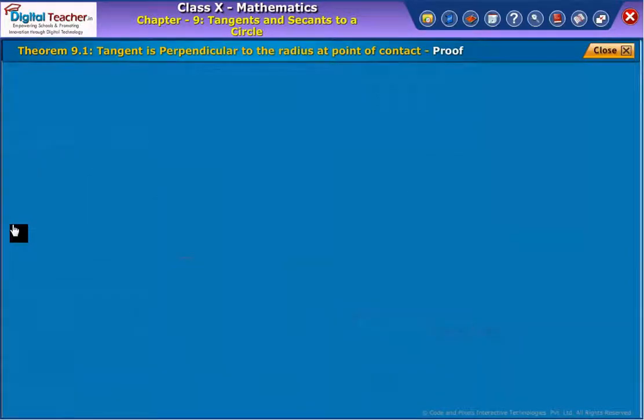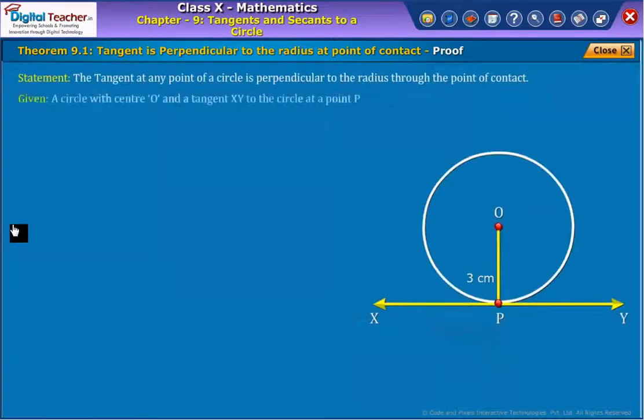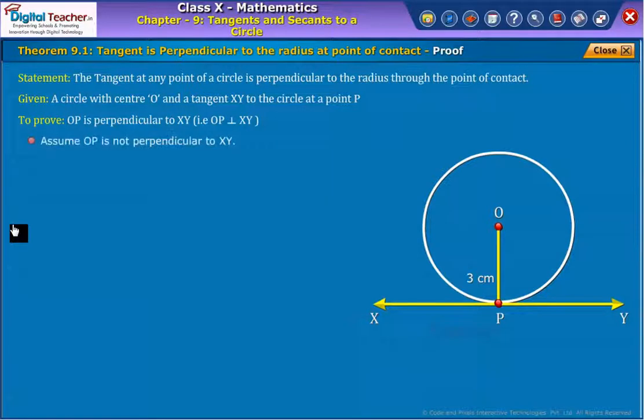Before proving the theorem, let us once again observe the statement, given data, and what to prove. Now, assuming the tangent is not perpendicular to the radius, that is OP is not perpendicular to XY.